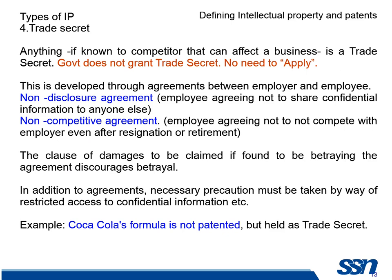Another one is called a trade secret. This is something that, if known to the competitor, can affect a business. So I choose not to apply for a patent — I call it a trade secret. You don't apply and the government does not give you authority, but you hold it as a trade secret. This can be protected by your own company through a non-disclosure agreement (NDA) and a non-competitive agreement. NDA means anyone who visits the campus has to sign it — that he will not use whatever he sees. A non-competitive agreement means an employee has to sign a declaration that even if he resigns, he will never go to a competing company. For example, Coca-Cola's formula is not patented — it is just held as a trade secret.